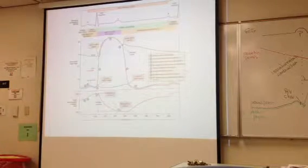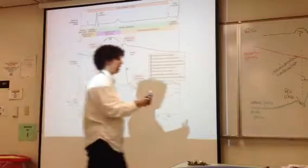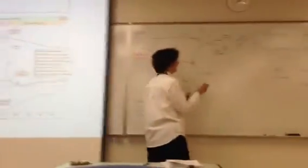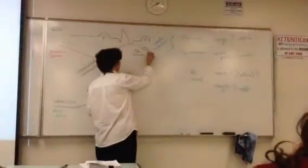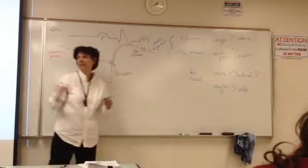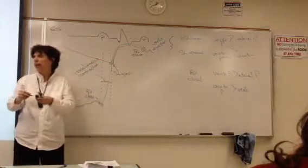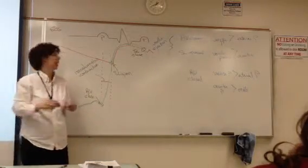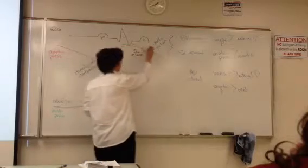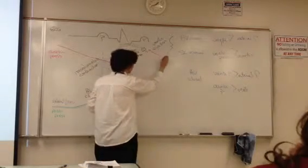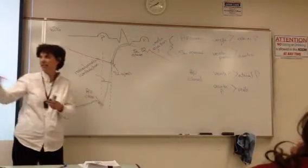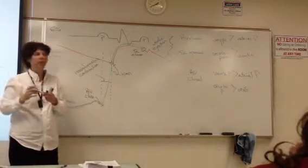Pressure continues to drop. This is where that dicrotic notch occurs — this is the disturbance, this is the closing of the valve. And then we're back to here, so this is going to start to decrease again as blood is moving away from the heart.